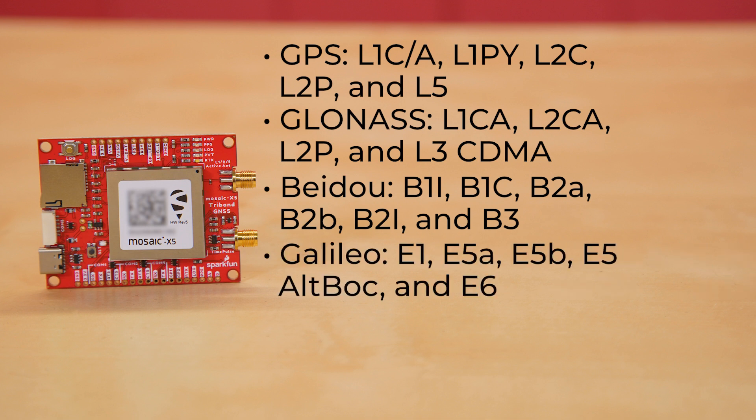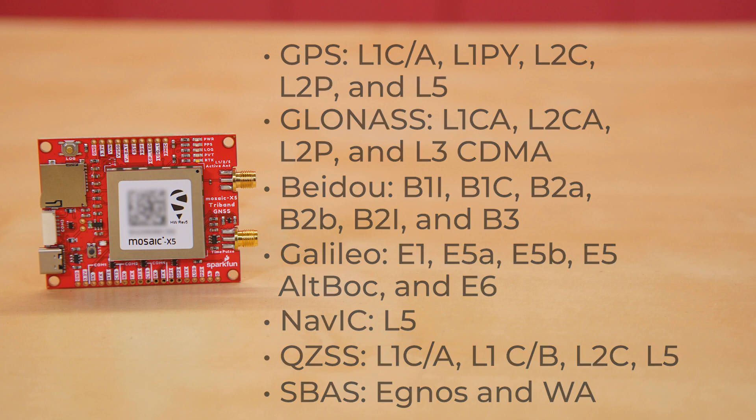GALILEO: E1, E5A, E5B, E5ALTBACH, and E6. From NAVI-C it'll read L5. And from the regional systems, from QZSS it'll pick up L1CA, L1CB, L2C, L5. And from SBAS, EGNOS, and WA.